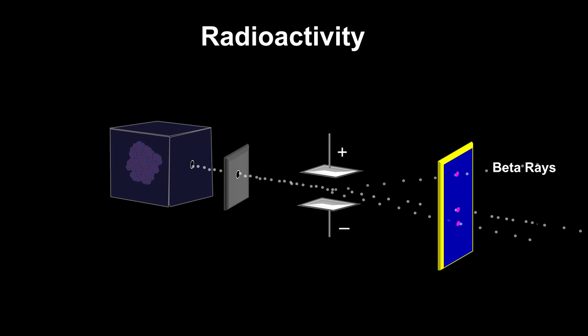One is deflected downward, but not as far as the beta rays were deflected upward, indicating that it consists of positively charged particles that are more massive than the beta rays. These were named alpha rays.